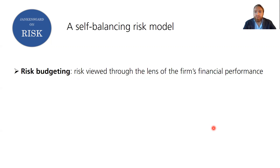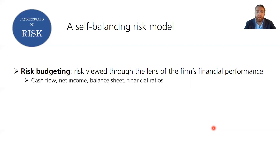The setting for this discussion is that we're trying to implement something referred to as risk budgeting, by which is meant the analysis of risk as viewed through the lens of the firm's financial performance. We express risk using financial numbers and financial forecasts — and that involves cash flow, net income, balance sheets, and financial ratios. So we find ways to express risk using these numbers.